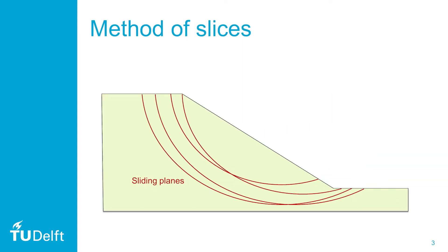Slopes in homogeneous soils generally fail with a circular failure mechanism as shown. We can calculate the safety of a specific sliding plane. We have to do this with many planes until we find the one with the lowest factor of safety. That is the plane which is most likely to fail. We call that the critical factor of safety.